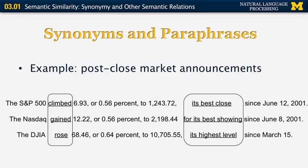The next section about text similarity is going to be on semantic similarity. We're going to look at synonymy and other semantic relations. I showed you this example in the introduction: there were three different announcements about the stock market, and they all used different words, and yet they meant more or less the same. So climb, gain, and rose mean pretty much the same in the context of a stock index going up or down.